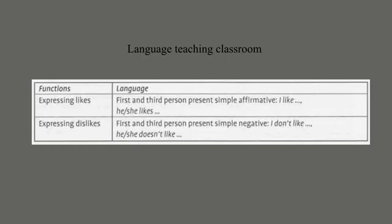There is an example of this in this map. You can see that the language in the second column includes present simple affirmative, which is a grammatical term, while 'I like', 'he/she likes' are exponents of the function expressing likes.